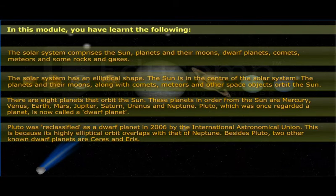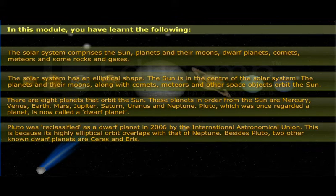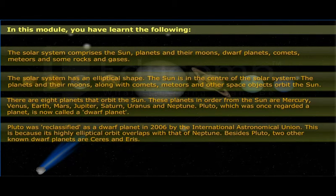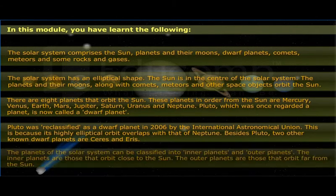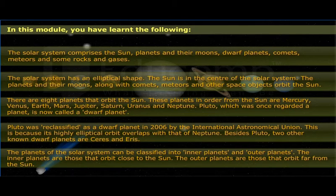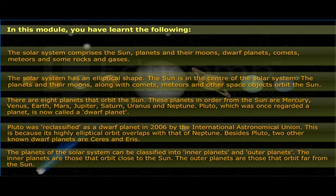Pluto was reclassified as a dwarf planet in 2006 by the International Astronomical Union, because its highly elliptical orbit overlaps with that of Neptune. Besides Pluto, two other known dwarf planets are Ceres and Eris. The inner planets are those that orbit close to the Sun, while the outer planets are those that orbit far from the Sun.